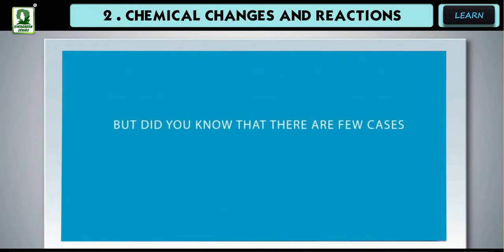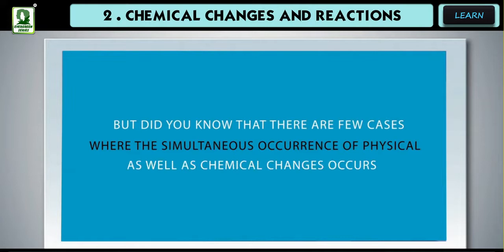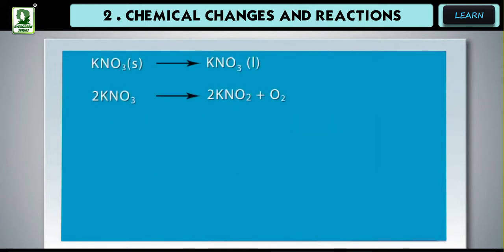But did you know that there are few cases where the simultaneous occurrence of physical as well as chemical changes occurs? KNO3 solid turns to KNO3 liquid, a physical change. 2KNO3 turns to 2KNO2 plus O2, a chemical change.